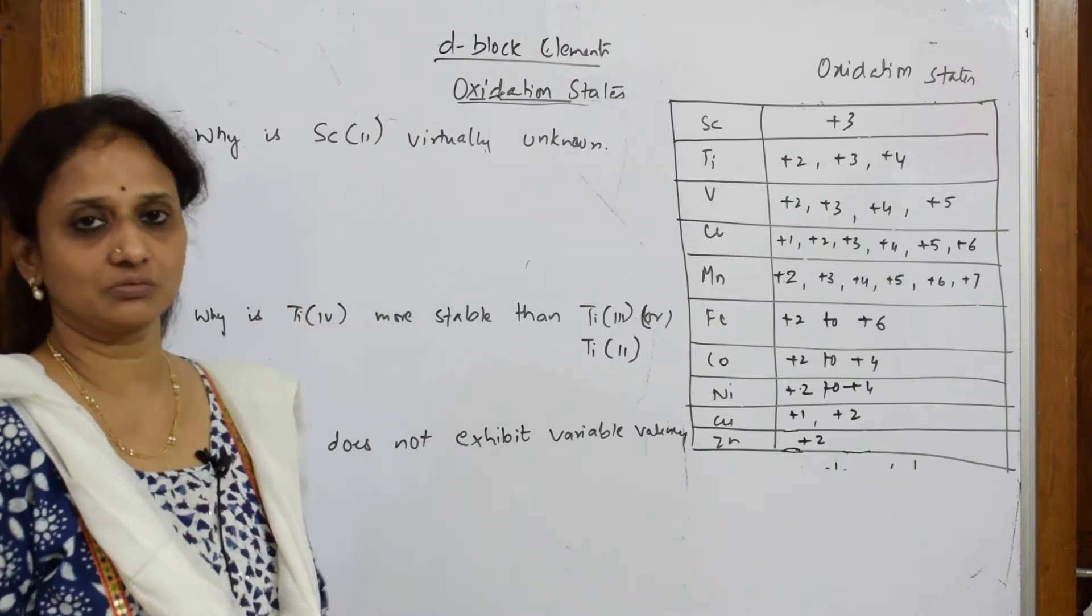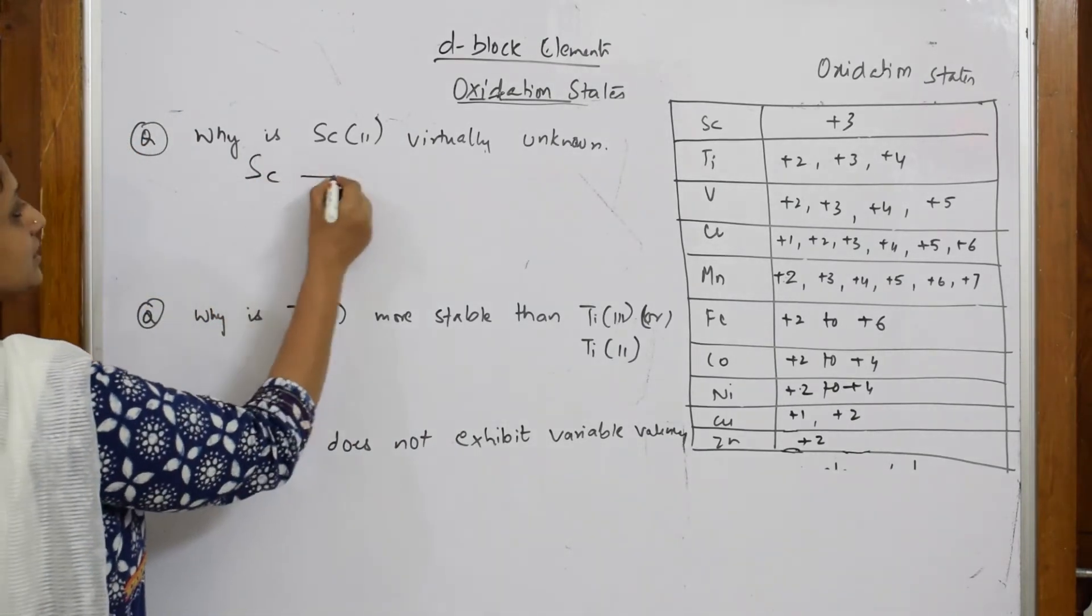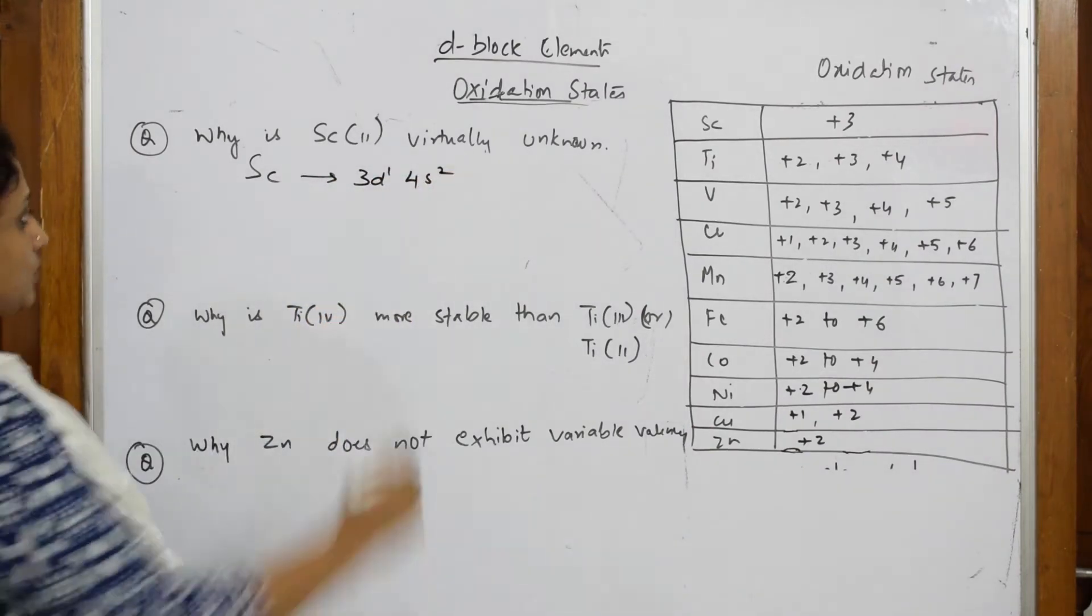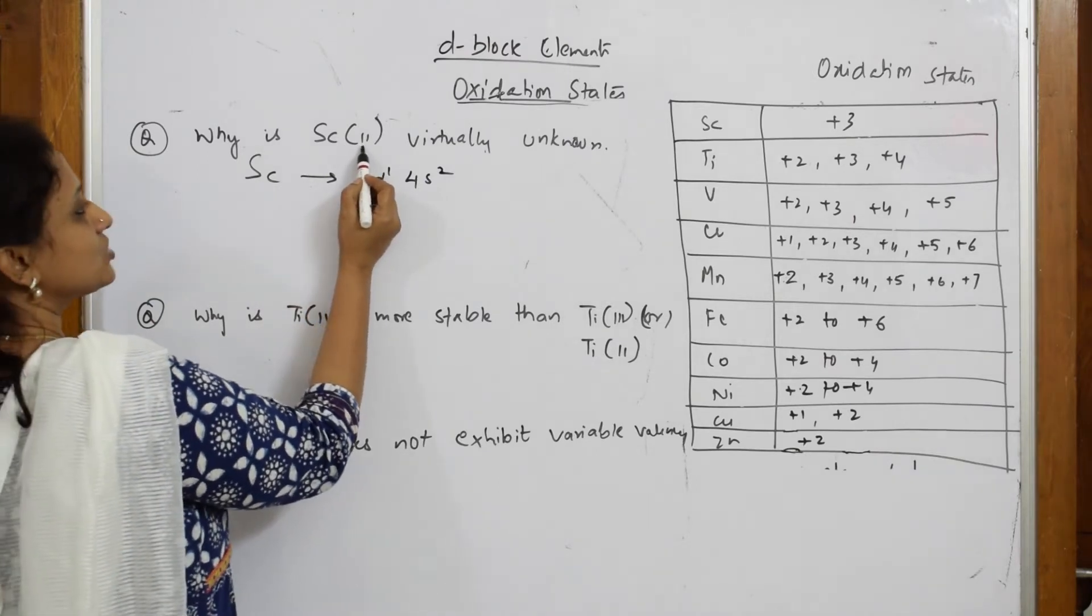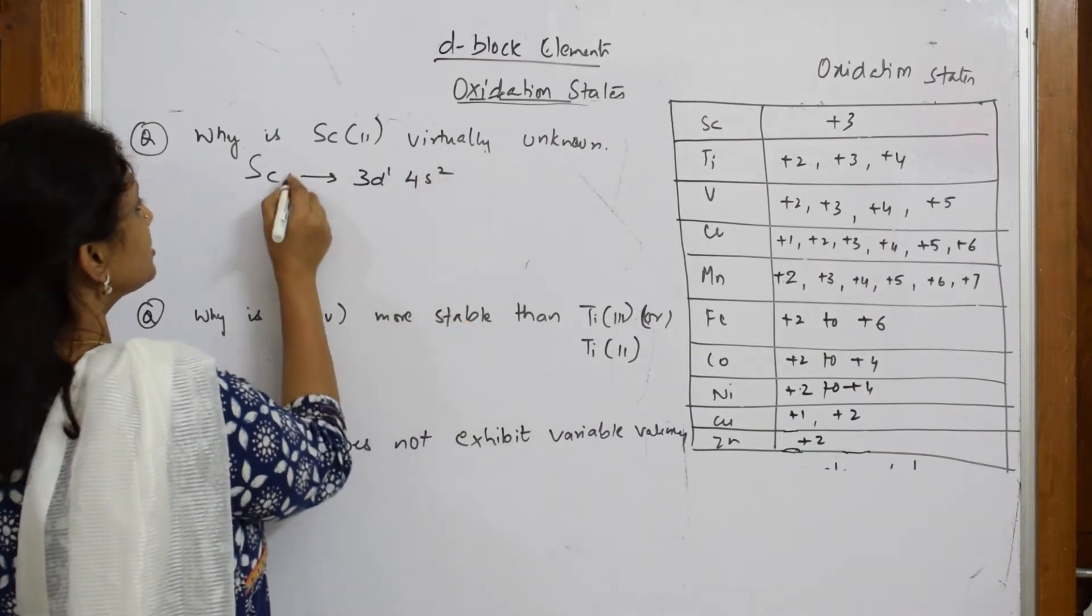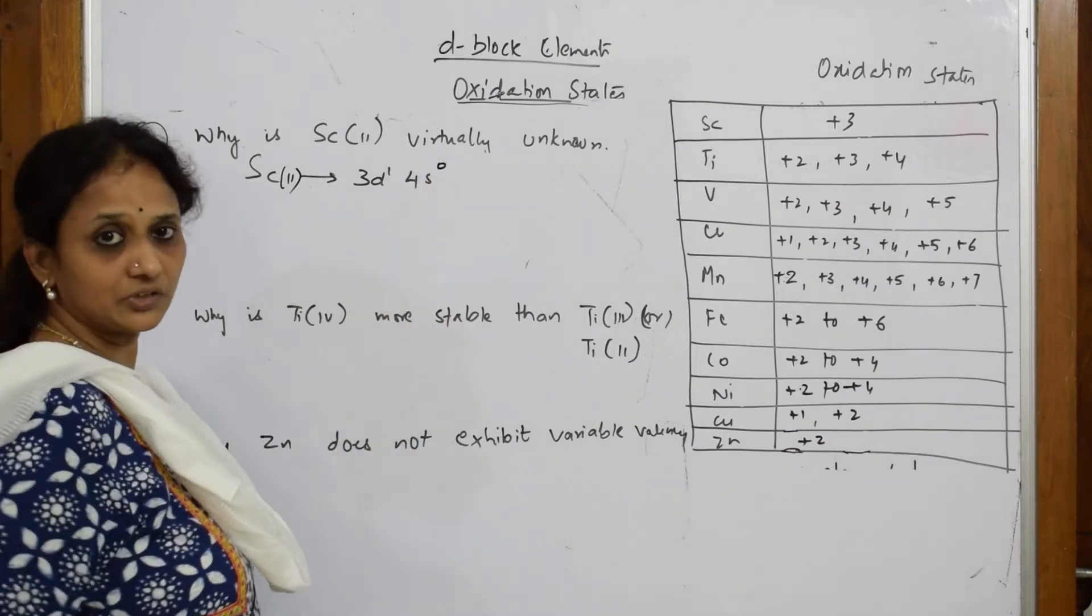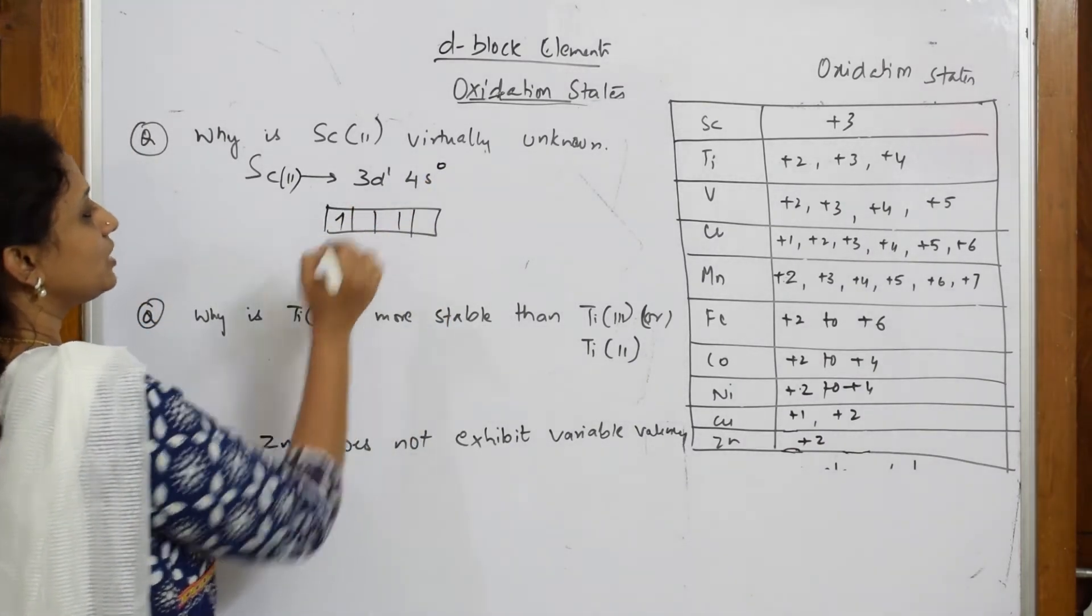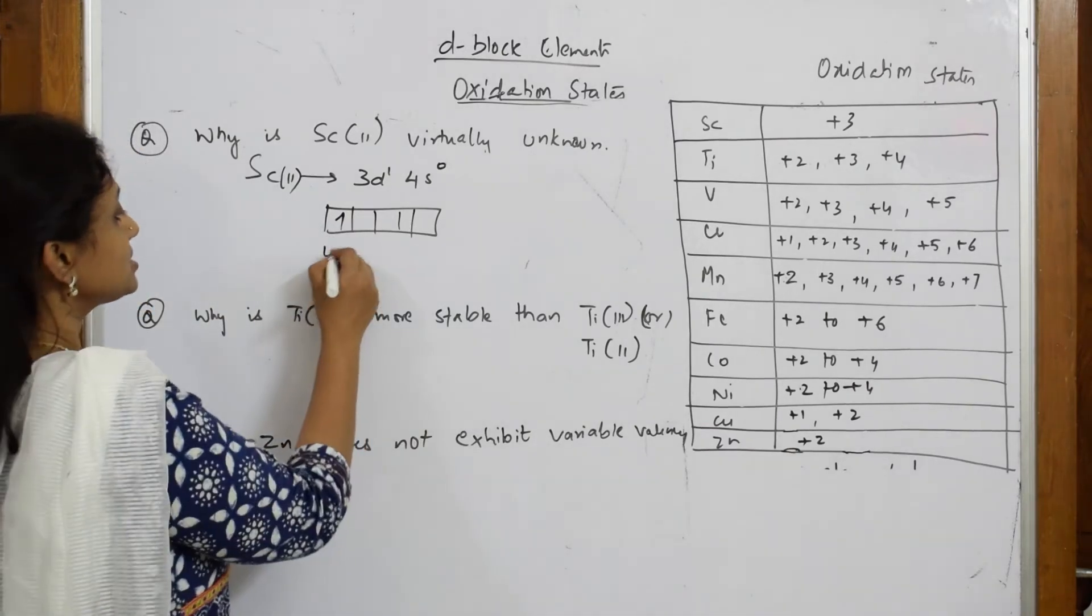When I have to take scandium, the configuration is 3d1 4s2, correct. Now this is scandium +2. So when I have to show +2 oxidation state, I have to remove electrons from here because this is the outermost shell. So scandium +2 becomes 3d1 4s0. Now the leftover electron in d-orbital, you have only one, highly unstable, isn't it? So this is unstable.